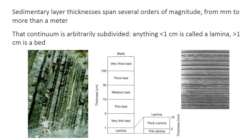We subdivide that continuum of bed thicknesses somewhat arbitrarily into things called laminae, which are defined as being less than a centimeter thick, and beds, which are defined as being greater than a centimeter thick. For example, rocks can be thickly laminated if the layering is between 3 and 10 millimeters, or thin bedded, or medium bedded, and so on.